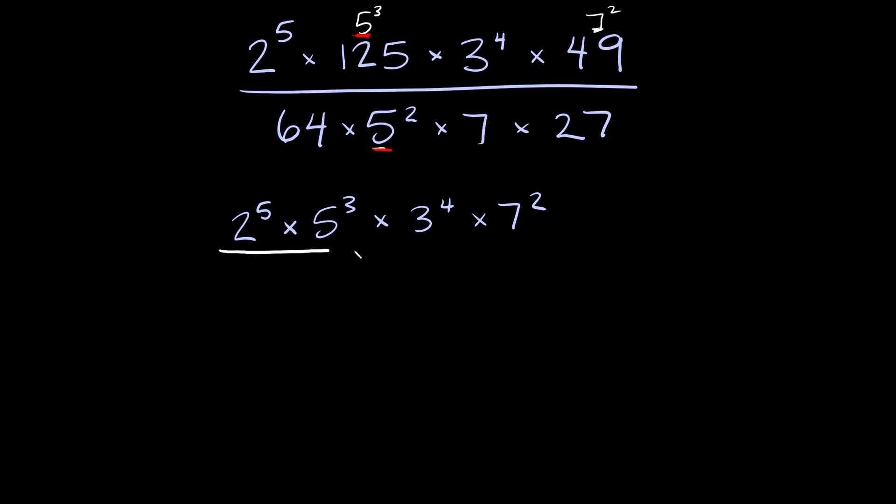Here we have 64 and you might be tempted to rewrite this as 8 squared but the issue here is we're gonna have an 8 but we don't have any 8's up here so it's not gonna be that easy to just cancel it out.